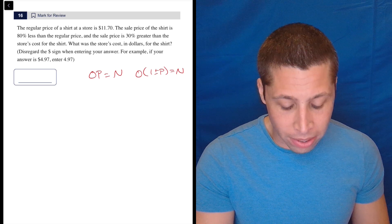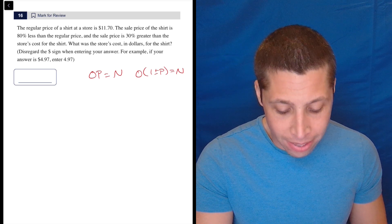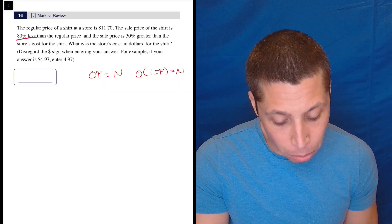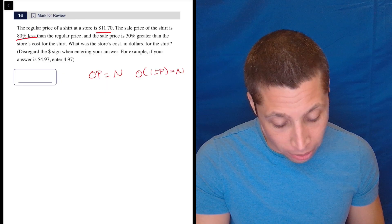The regular price of a shirt at a store is $11.70. The sale price of the shirt is 80% less than the regular price. Okay, stop there. So 80% less than the regular price. I'd probably keep reading anyway, but let's just do this one step and there we go.